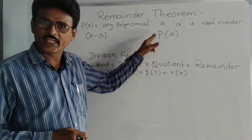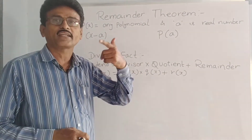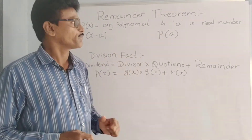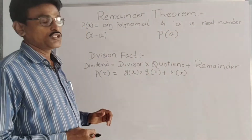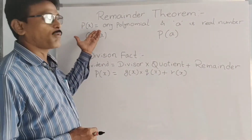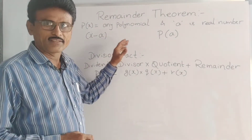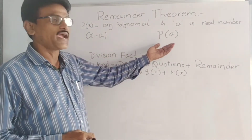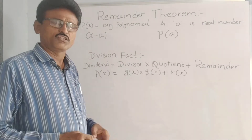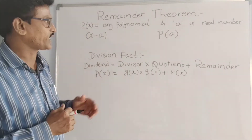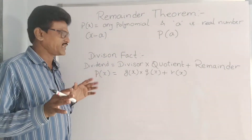If P of x is any polynomial of first degree or greater than first degree and a is any real number, if we divide the polynomial P of x by x minus a, then the remainder is P of a. If you solve problems, you can understand this remainder theorem. It is very easy.